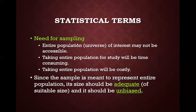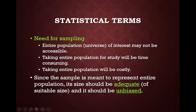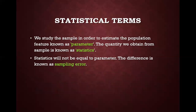From the population, you take a smaller, manageable number of individuals, which is known as a sample. A sample is a small, manageable number of objects or individuals of the population from which the data is collected, and the inference from that sample is applied back to the population. The need for sampling is that the entire population may not be accessible, it is time-consuming to study everyone, and it is costly. The sample should be adequate in size and unbiased.